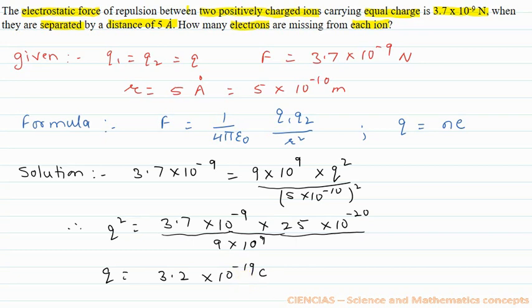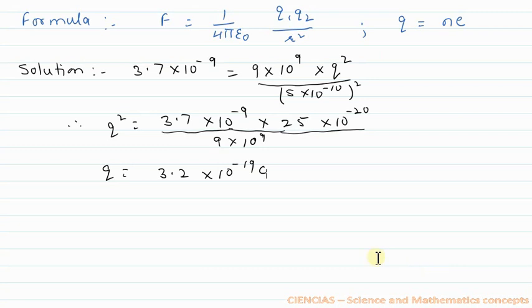The value of each charge comes out to be 3.2 × 10^-19 coulomb. Therefore, number of electrons is Q/e. The value of Q is 3.2 × 10^-19 and the value of e is 1.6 × 10^-19. After solving this, we get 2.